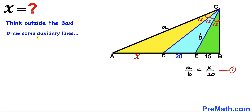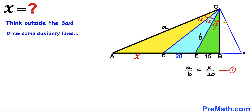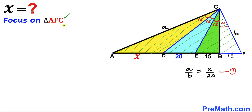We draw some auxiliary lines, constructing triangle BCF that is congruent to triangle BCE — in other words, these triangles are symmetric. If this angle is alpha, then this corresponding angle is also alpha. If this side length is lowercase b, then the corresponding side is also b. Finally, segment BF is also 15 units.